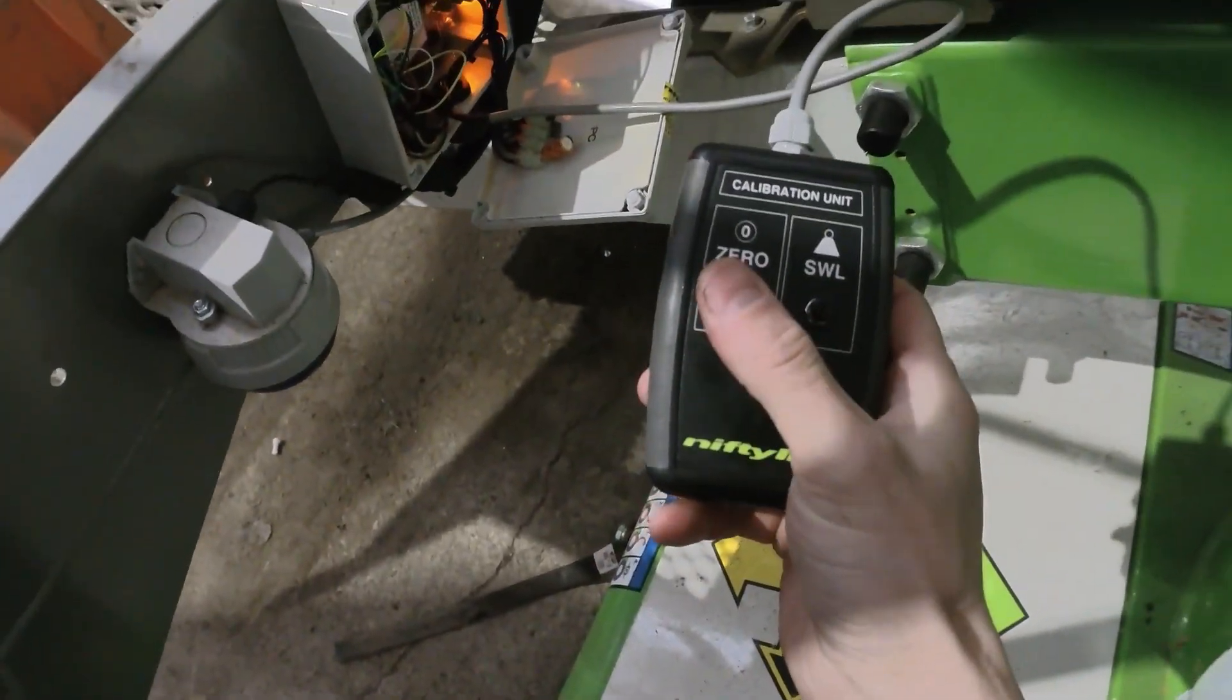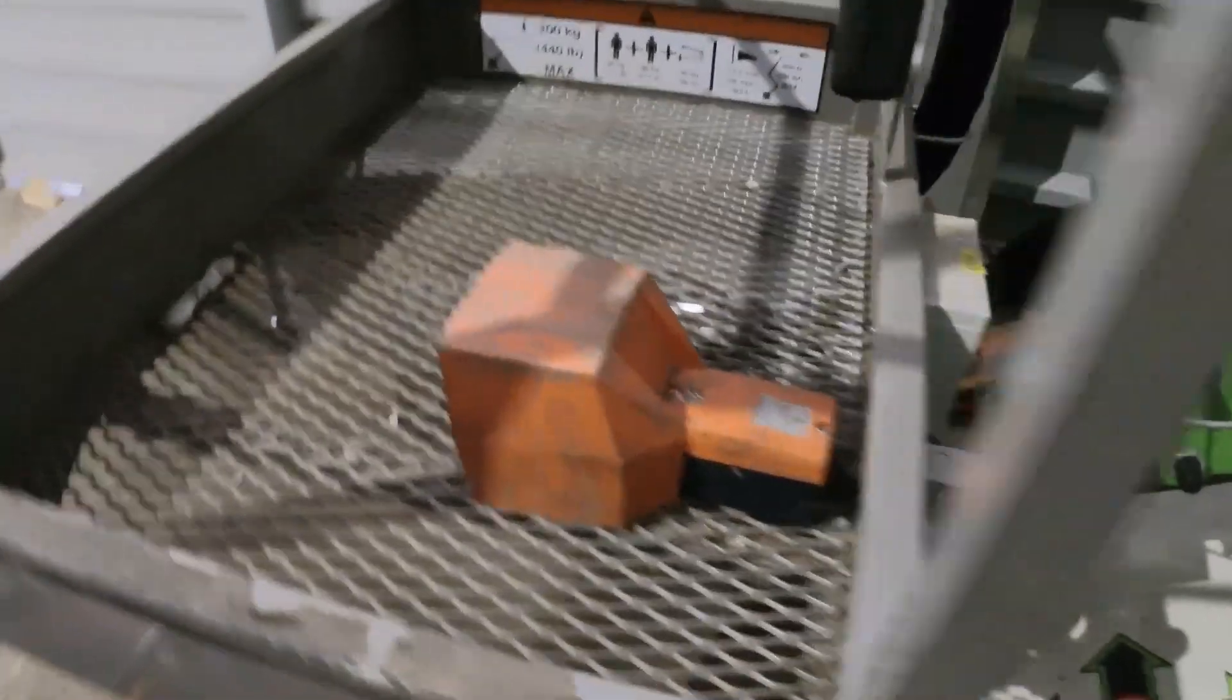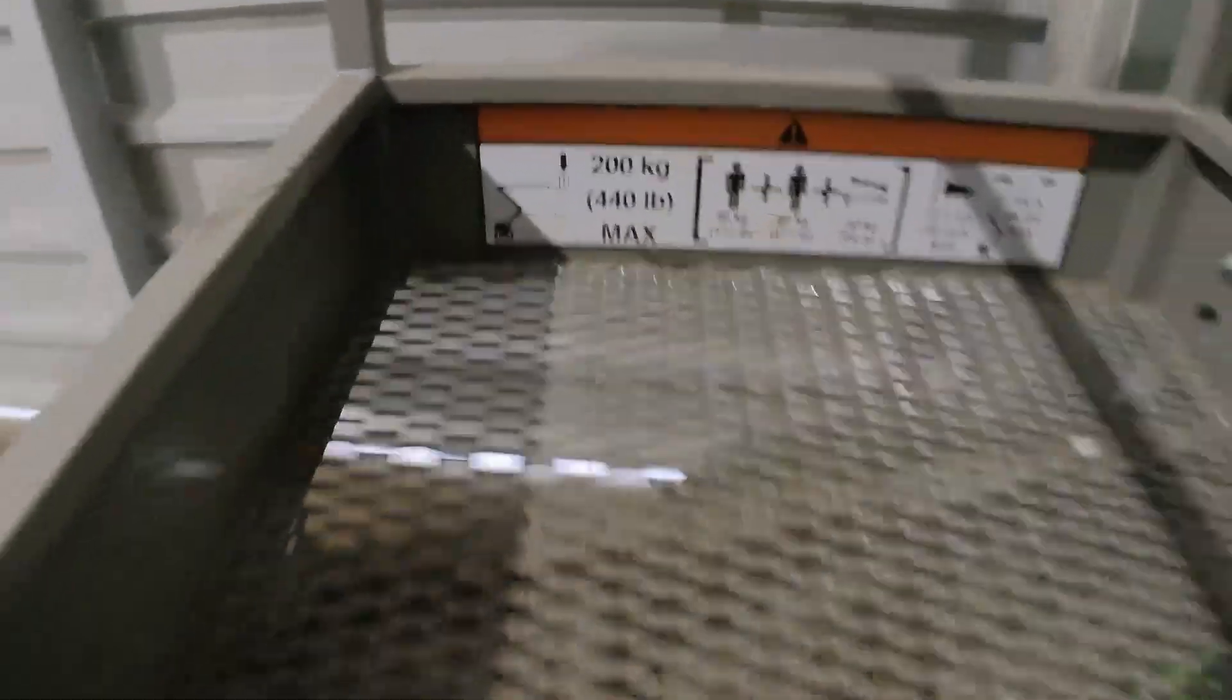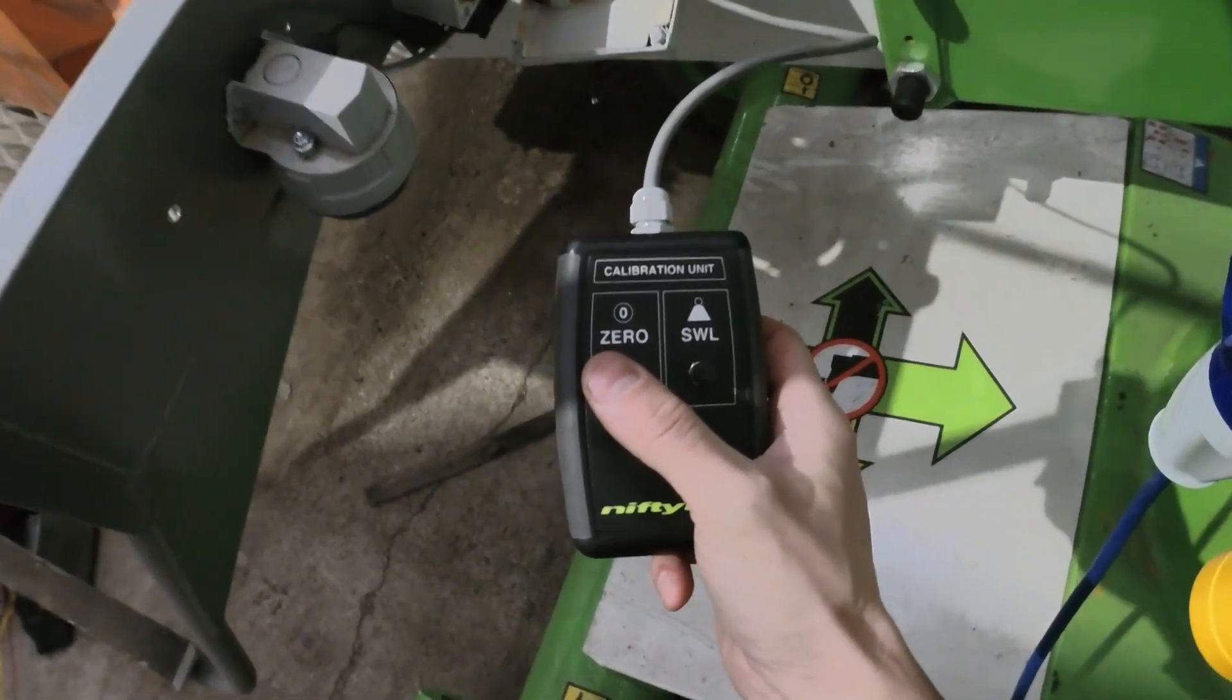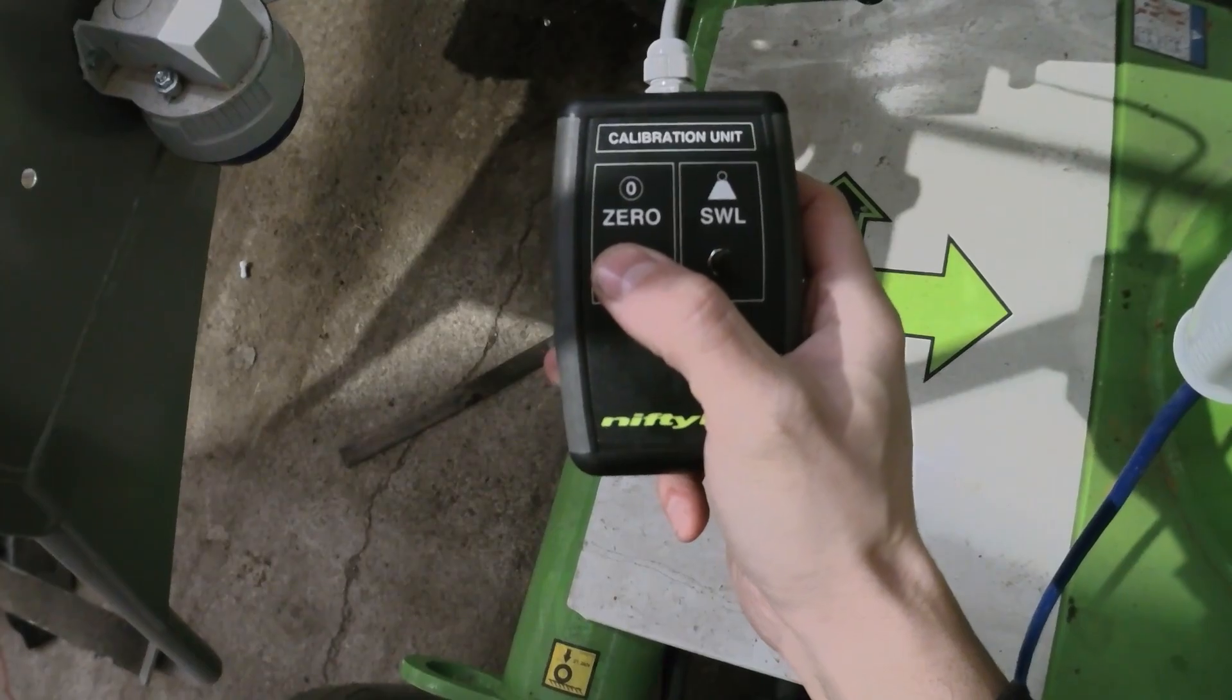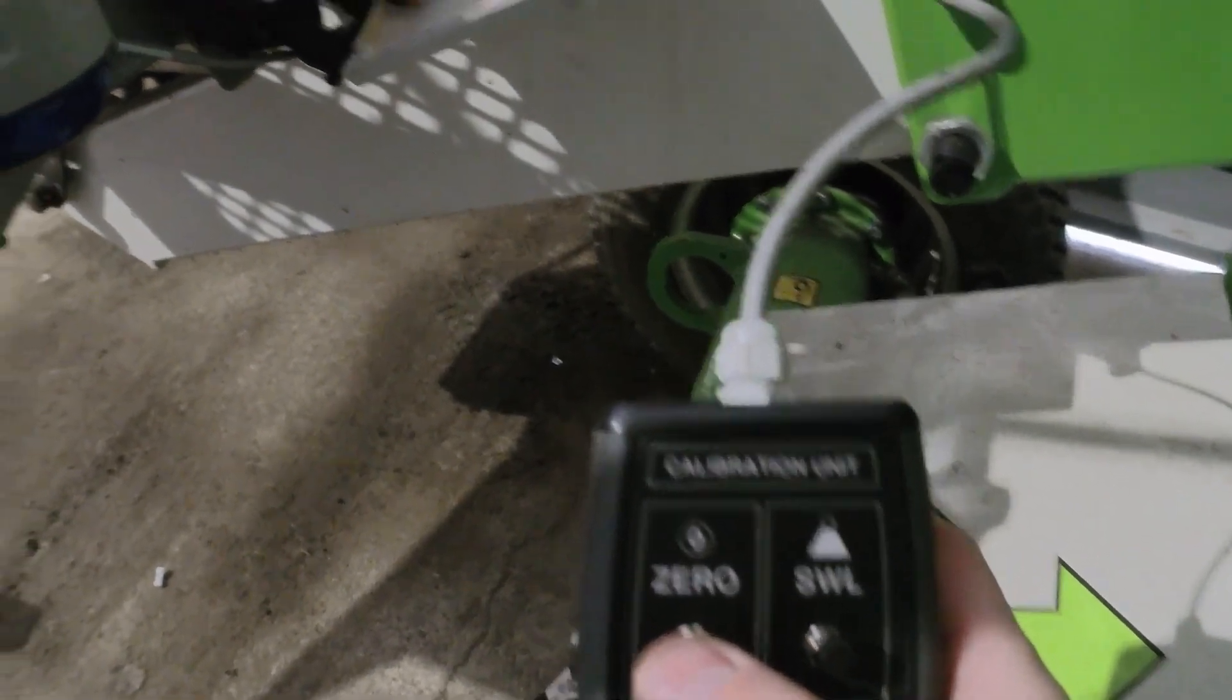First thing, as always, I will calibrate zero. We have nothing in the cage. Safe working load for this machine is 200 kilos. I will do zero with empty cage. You just need to make sure that you don't rest yourself on the cage and nothing is touching the cage, and we press and hold that for about seven to ten seconds.